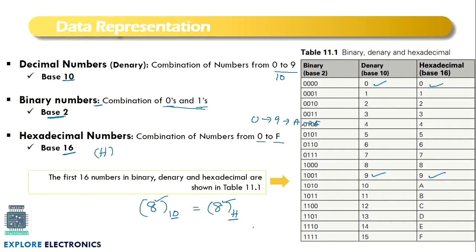To represent numbers in binary, a single hexadecimal digit requires four bits. For example, 8 in binary is 1000. Even the smallest hexadecimal value, zero, must be represented with four bits: 0000 in binary.